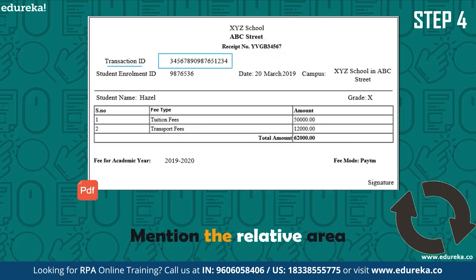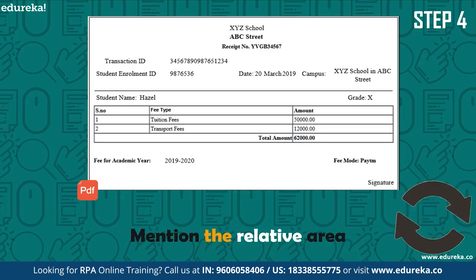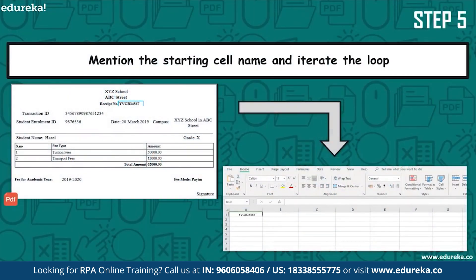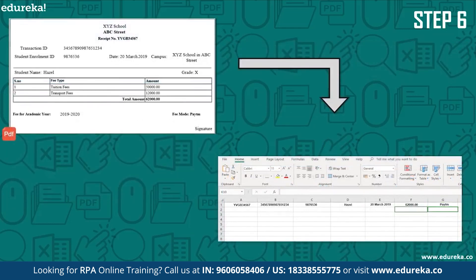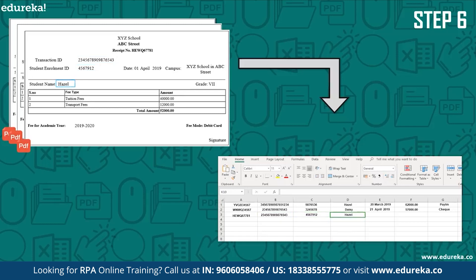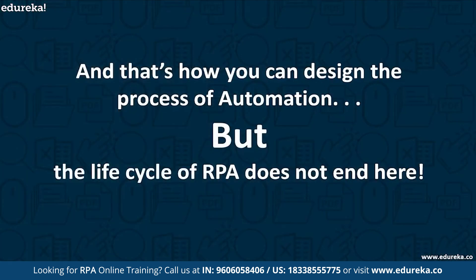You then mention the relative area next to the field from which you wish to extract the data. You can repeat this action until all the fields are designed to extract. At this point, you have designed your automation to extract data, but you haven't defined the rules to store it into specific cells. To define this, you mention a starting cell — for example, A1 — and automatically iterate a loop to store the next extracted value of the same invoice in the same row but the next column. Once all the data has been stored for a single file, you define rules for the bot to iterate for the next file, moving one cell below to the beginning of the next row. Repeating the extraction and storage action will store all field values in the designated Excel sheet. That's how you design the process of automation.